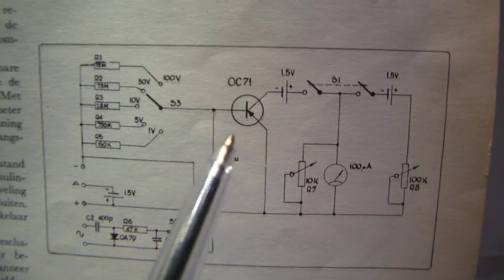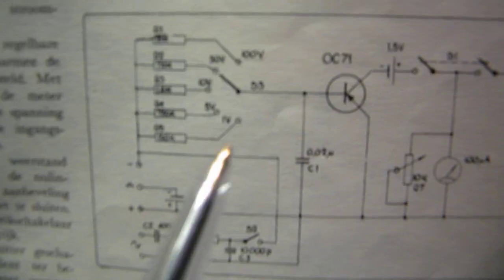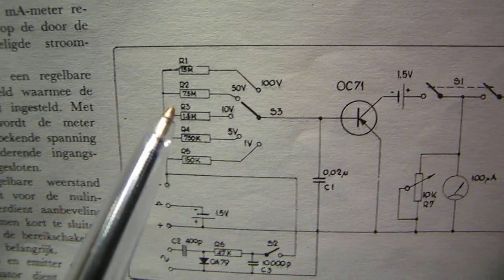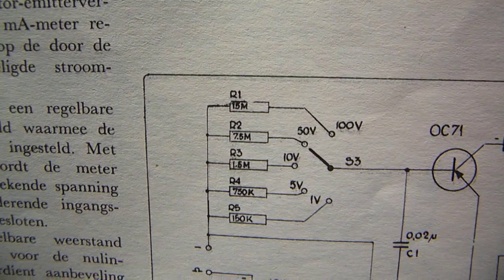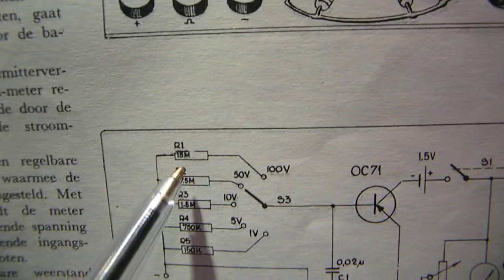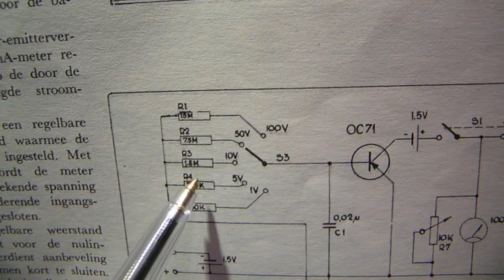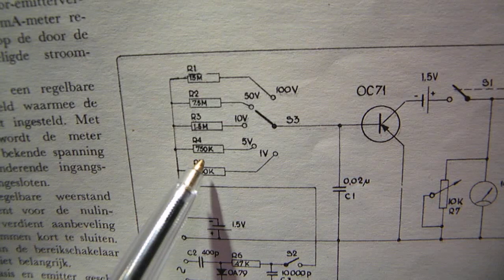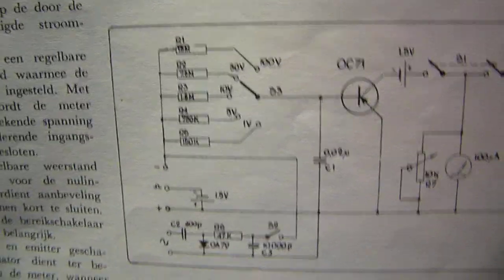A germanium transistor here at its input a range of high resistive resistors. Here 15 mega ohm, 7.5 mega ohm, 1.5 mega ohm, 750 kilo ohms and 150 kilo ohms.